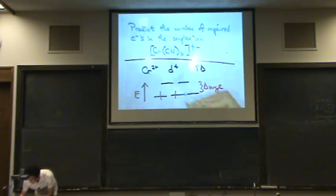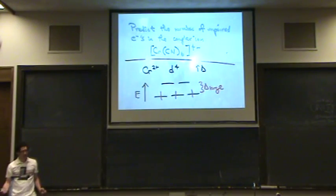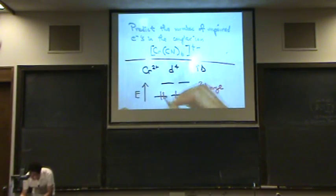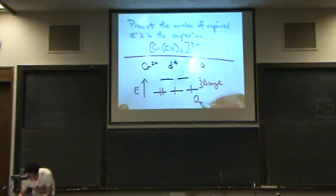So 1, 2, 3. Because delta is large, the fourth one is going to stay on bottom. So that makes there's 2 unpaired electrons.